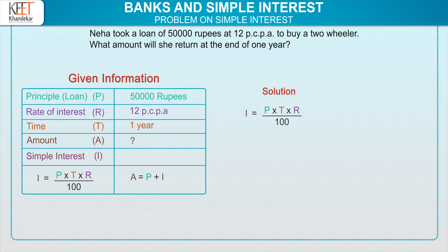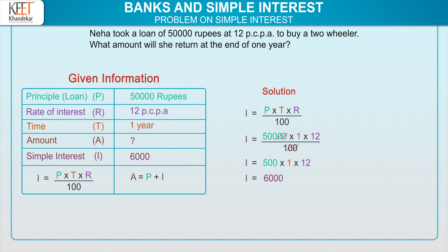Put the values of P, T, and R in the formula. So we get I equals 50,000 into 1 into 12 upon 100. On canceling the two zeros of 50,000 and 100, we get I equals 500 into 1 into 12. And on multiplying, we get I equals 6,000. Therefore, the interest is Rs. 6,000.